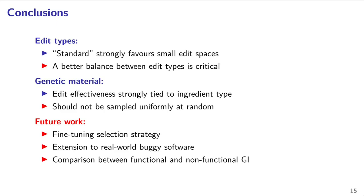In our experiment, we investigated how GI edits are generated — most frequently in two steps: first selecting an edit type, then sampling the genetic material. We showed that selecting edit types uniformly leads to overrepresentation of small edit spaces. Our results confirm that while this can be beneficial when fixes can be found using those edits, the search process could be improved by a better balance between edit types. In contrast to previous work, deletions were significantly less useful than expected, with none present in the final patches of the uniform strategy. Statistics also showed that not all genetic material was equally useful, another area where better guidance could improve search.